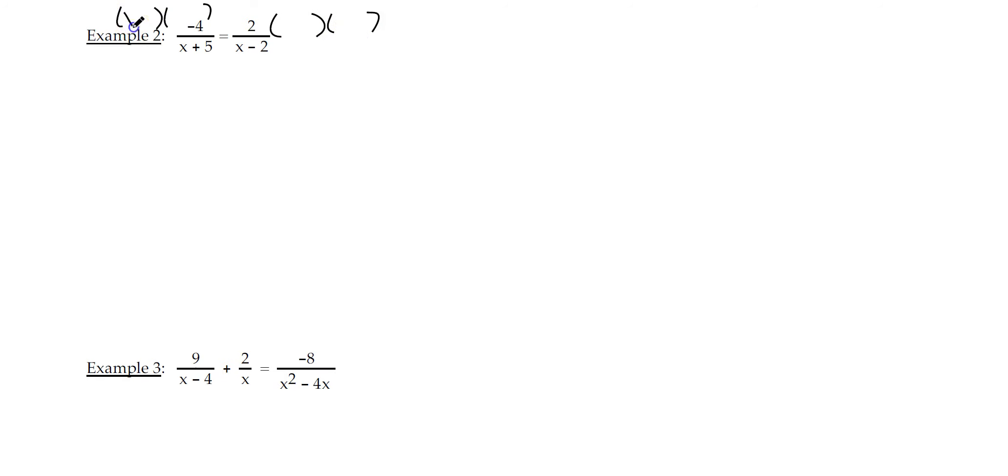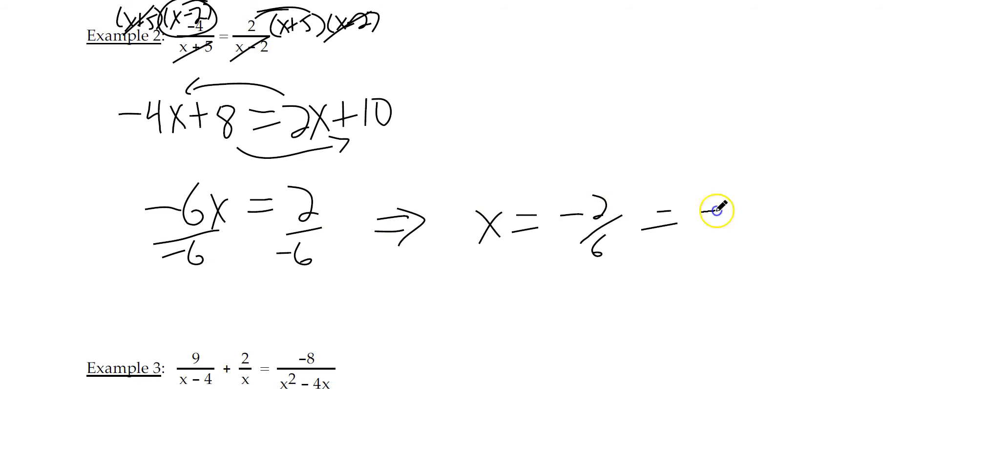The LCD is x plus 5 and x minus 2. So the x minus 2 reduces on the right side, and the x plus 5 reduces on the left side. Now we'd have to distribute the minus 4, so minus 4x plus 8. And here, distribute the 2, that is 2x plus 10. Let's move the x's to the left and the numbers to the right, giving us negative 6x equals 2. Divide by negative 6, and we have our answer, x equals negative 1 third.